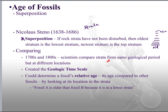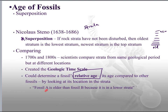In the 1700s and 1800s, scientists compared strata from the same geological period but different locations — the United States, Europe, Asia — and they created what we call the geologic time scale. They could determine a fossil's relative age, which is its age compared to other fossils, by looking at its location in the strata. For example, fossil A is older than fossil B because it is in a lower stratum.